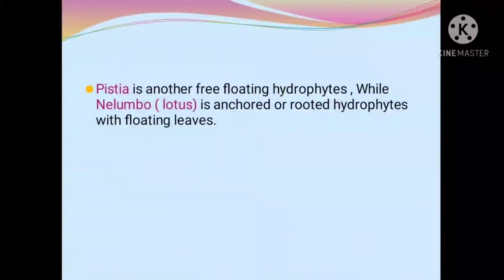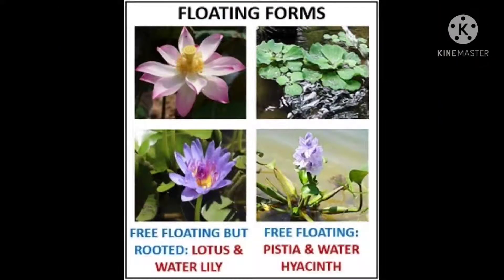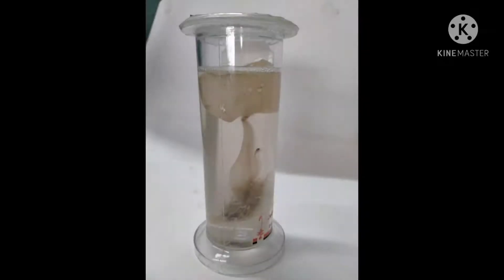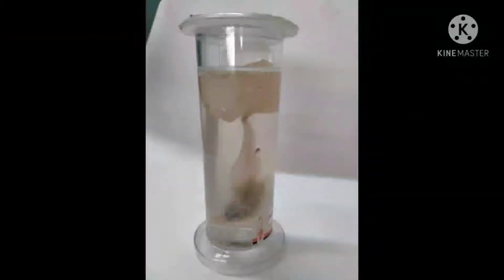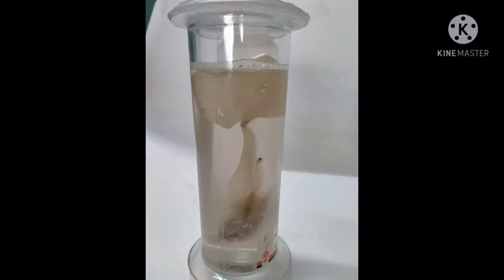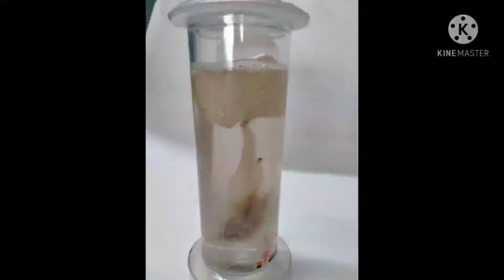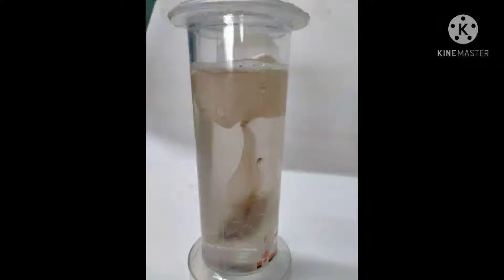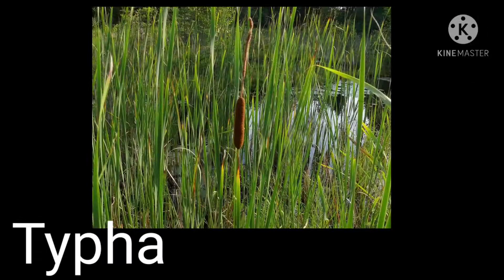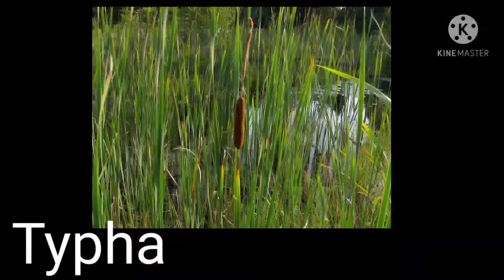Pistia is another free-floating hydrophyte. Nelumbo, that is lotus, is an anchored or rooted hydrophyte with floating leaves. These are laboratory bottle specimens which will be kept for examination for spotting purpose — you have to observe and write down a few points related to them.